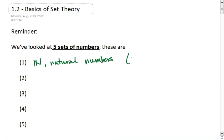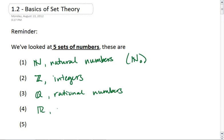These are the natural numbers, and we also looked at the natural numbers including zero, the integers, the rational numbers, the real numbers, and the complex numbers.